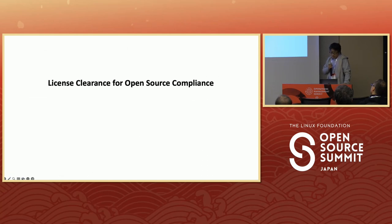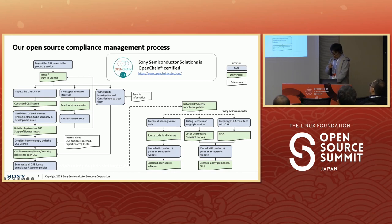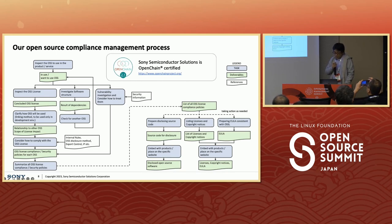Now we move on to the license clearance issue. Achieving open source license compliance can be challenging. In addressing those challenges, we have established an internal open source compliance management process, and we are proud to be OpenChain certified. We are essentially grateful to the OpenChain community for guiding us in improving our processes. However, it's important to note that our compliance process is stringent, detailed, time-consuming, and not always easy to grasp.